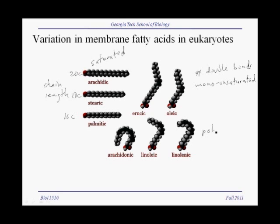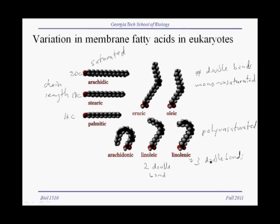There are also polyunsaturated fatty acids, meaning they have more than one double bond. With each additional double bond, you get increased bending. Linoleic acid has two double bonds, linolenic acid has three double bonds, and it begins to look like a hook. Arachidonic acid has four double bonds and is almost closing in upon itself.